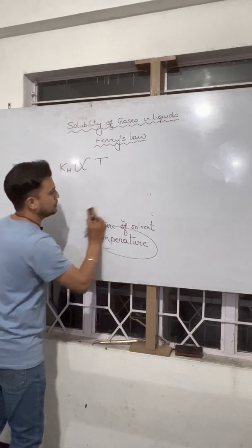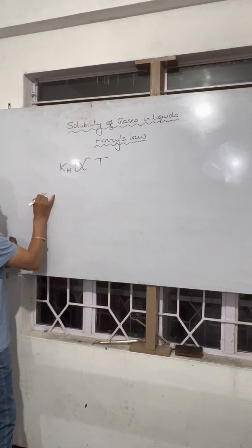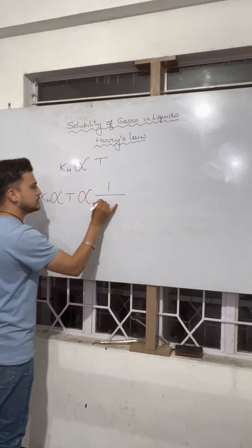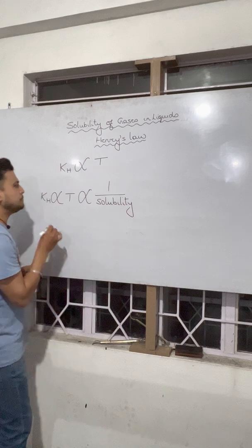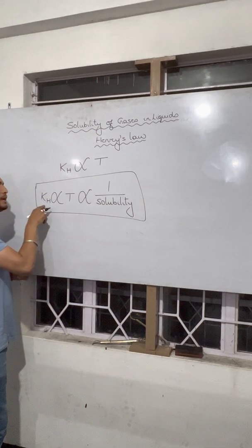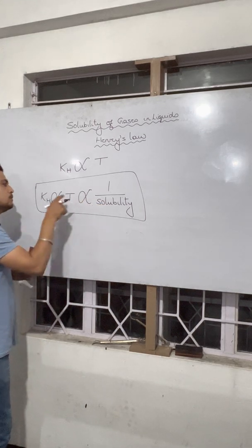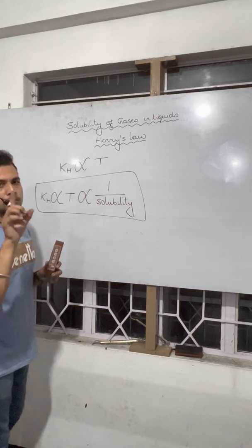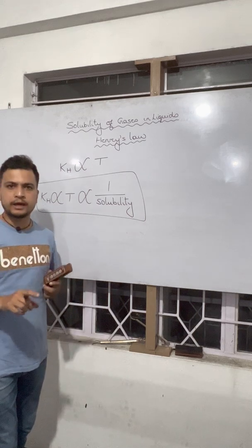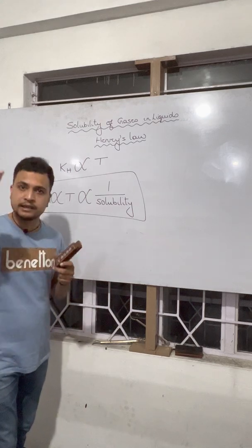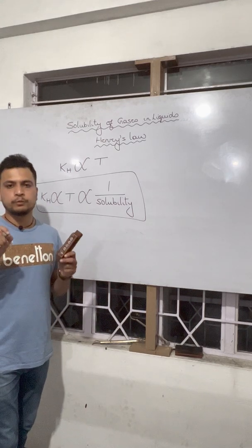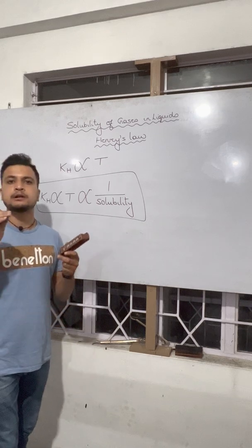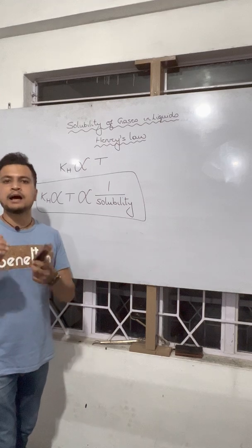Putting these things together: KH is directly proportional to temperature, and KH is inversely proportional to solubility, that is mole fraction. That means when KH is higher, solubility will become lower; and when KH is higher, temperature is higher. So when temperature is higher, solubility will always be lower. When we try to dissolve a gas at a higher temperature, it will always be less soluble. Always remember that at low temperature, gases are more soluble than at high temperature.